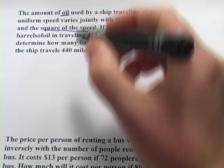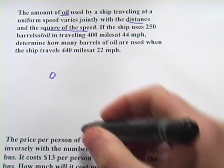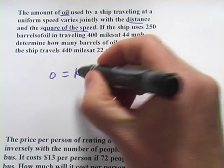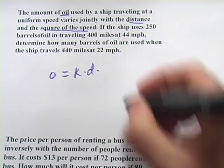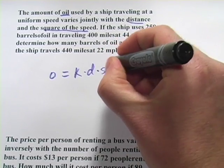So the amount of oil, I'm going to call that O, varies jointly, so here's our constant of variation, with the distance and the square of the speed. So I'm going to call that S squared.